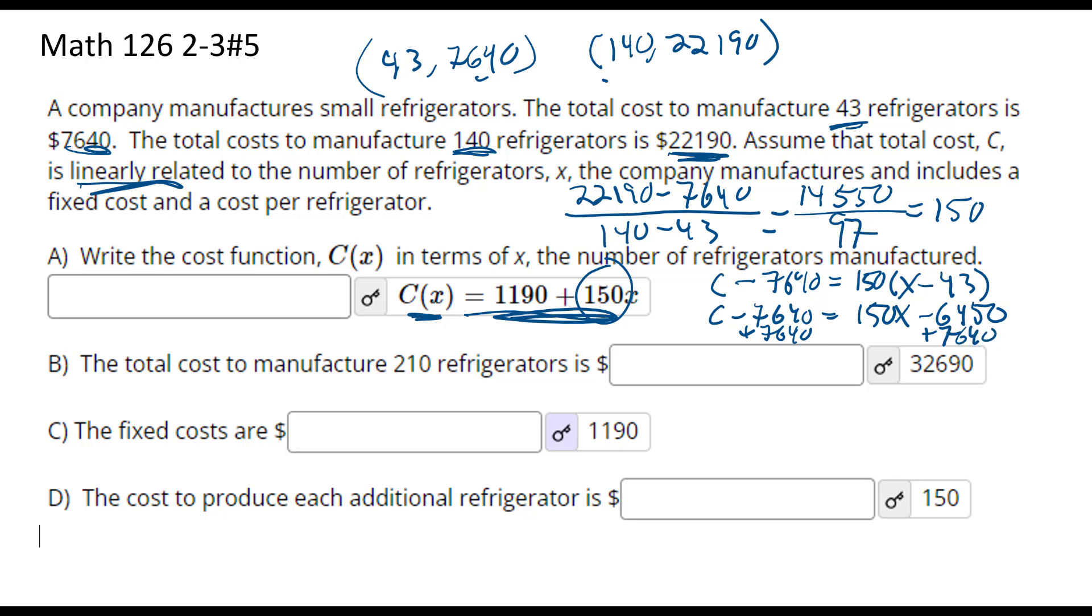So our C of X, I'm running out of space here, C of X equals 150X plus, so I have 7640 minus 6450, and I get 1190. So C of X equals 150 times X plus 1190.